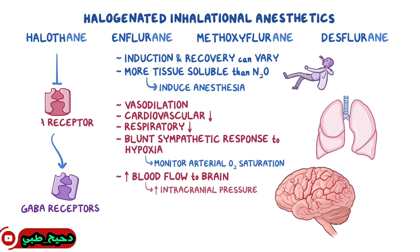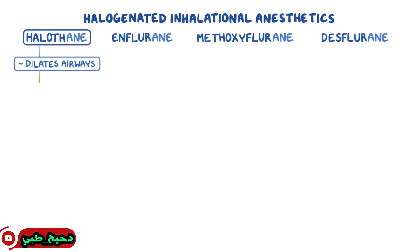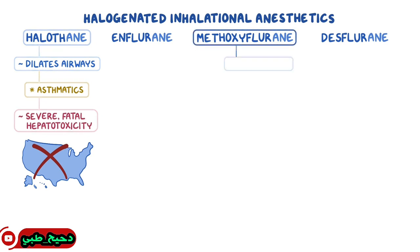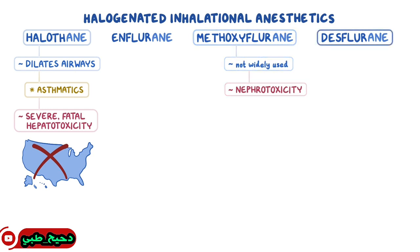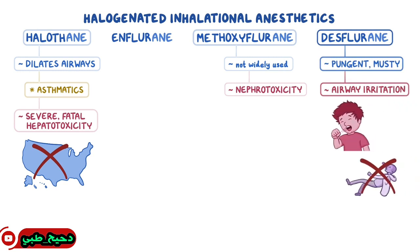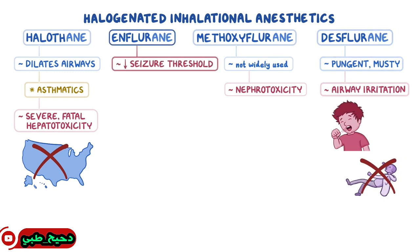Halothane dilates the airways, so it can be used in asthmatics. However, halothane is no longer used in developed countries like the U.S. due to its severe and sometimes fatal hepatotoxicity. Methoxyflurane is also not widely used anymore since it causes nephrotoxicity. Desflurane has a pungent, musty smell and can cause airway irritation leading to coughing, so it's not used as an induction agent. Fluorane, on the other hand, lowers the seizure threshold, so it's contraindicated in people with epilepsy.